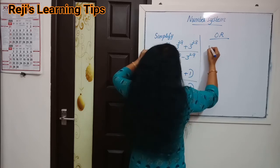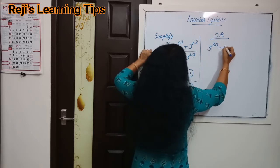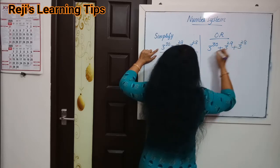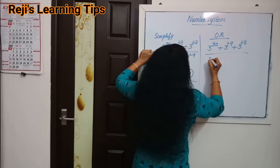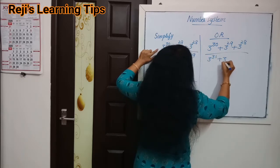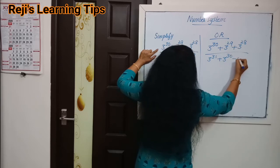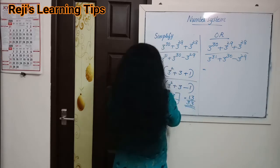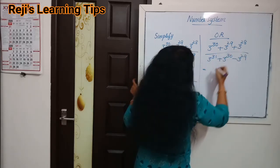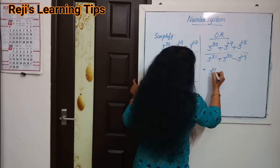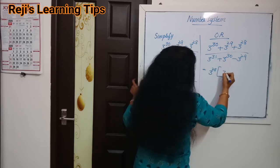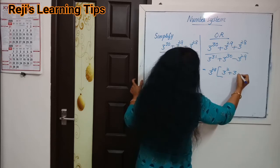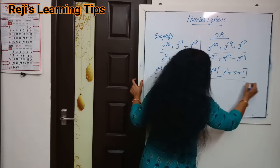Let's simplify the same question again: 3 raise to 30 plus 3 raise to 29 plus 3 raise to 28, divided by 3 raise to 31 plus 3 raise to 30 minus 3 raise to 29. We take 3 raise to 28 outside in the numerator, giving 3 square plus 3 raise to 1 plus 1.